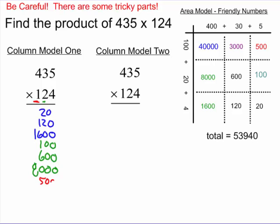100 times 5, 500. 100 times 30, 3,000. And 100 times 400, this is the big one. There's 40,000. And if I add all of that up, hopefully it still fits. I should get my 53,940. So you can see that column model number 1 starts to get a little bit long when we get bigger numbers.